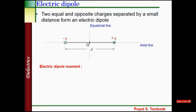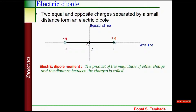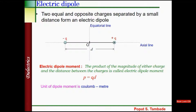Now we define electric dipole moment. The product of the magnitude of either charge and the distance between the charges is called electric dipole moment. So electric dipole moment p is equal to q into d, and its unit is coulomb meter.